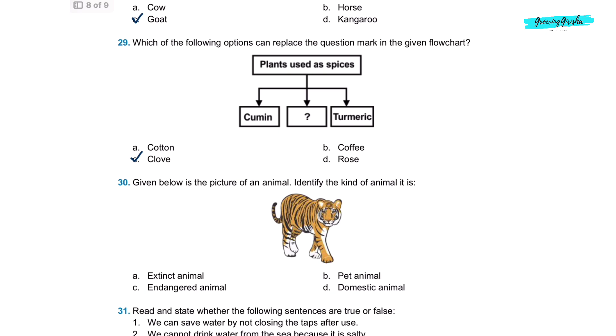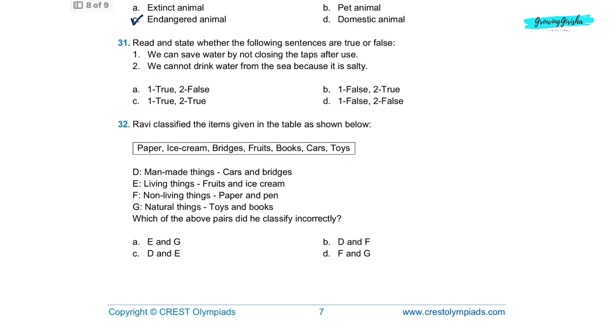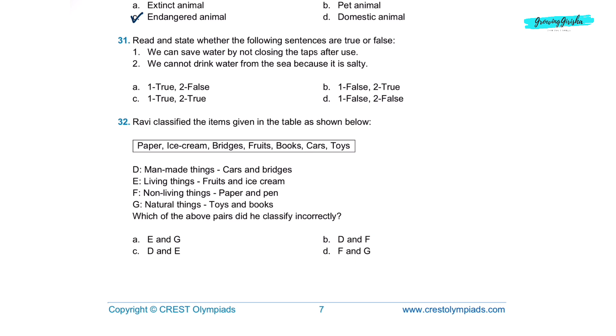Question 30. Given below is a picture of an animal. Identify the kind of animal it is. Option C, endangered animal. Question 31. Read and state whether the following sentences are true or false. One, we can save water by not closing the taps after use. That is not true. Two, we cannot drink water from the sea because it is salty. Yes, it is correct. So correct option would be one false, two true, which is in option B.